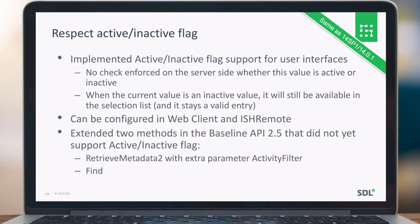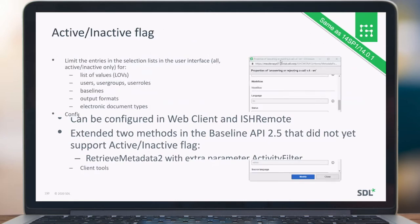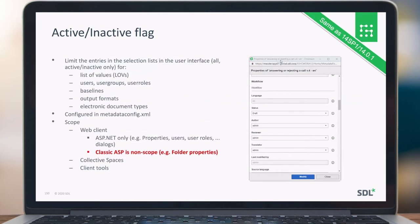The active/inactive flag support is implemented for user interfaces. There is no forced server-side check on whether a value is inactive or not. It can be configured in the web client and if remote. Also, a couple of methods in the baseline API that did not support it yet have been extended — retrieve metadata, and find also currently respects the active/inactive flag. The flag limits the number of entries in a selected list, currently covering list of values, user roles, baseline output formats, and electronic document. This can all be configured in the metadata config XML.